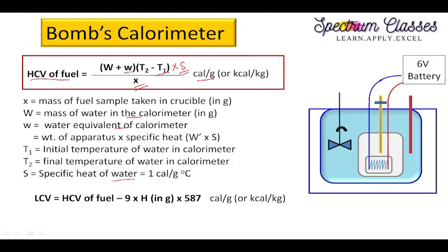S is the specific heat of water, since water is taken. If some other solvent is used, we take the specific heat of that solvent. S is in calories per gram per degree centigrade — the degree centigrade cancels with T2−T1, and grams cancel with W and w, giving us calories per gram as the final unit.